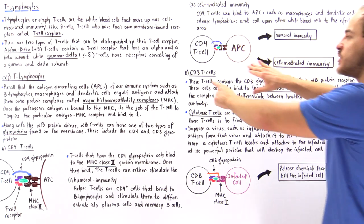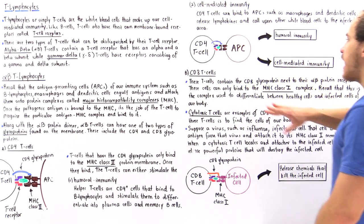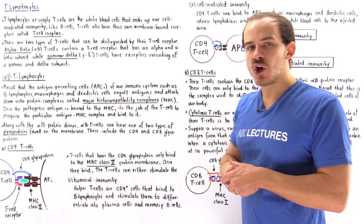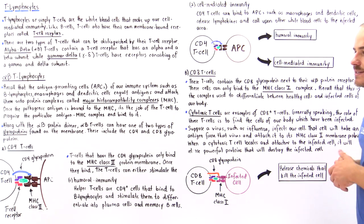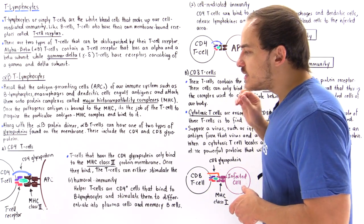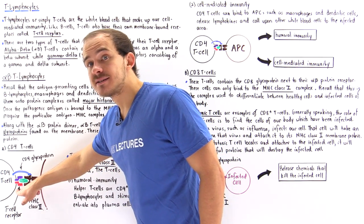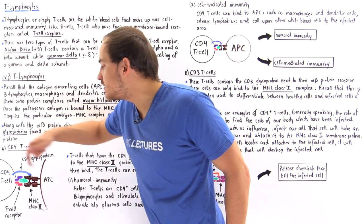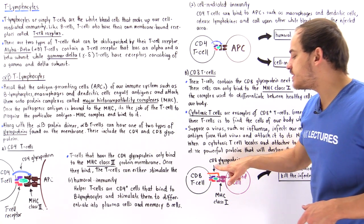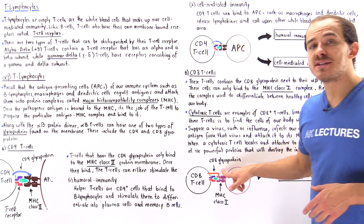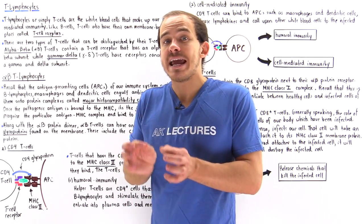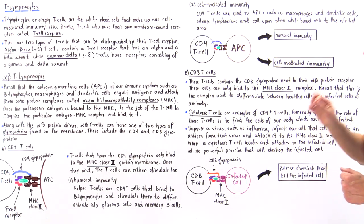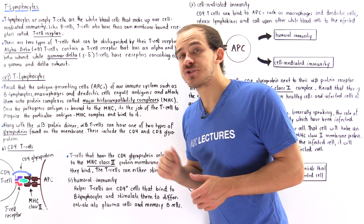On the other hand, CD8 T cells can only stimulate the cell-mediated immunity. A CD8 T cell contains that same alpha-beta T cell receptor but a different glycoprotein — the CD8 glycoprotein — and what this glycoprotein does is it is able to bind to the major histocompatibility complex class I, and not class II.